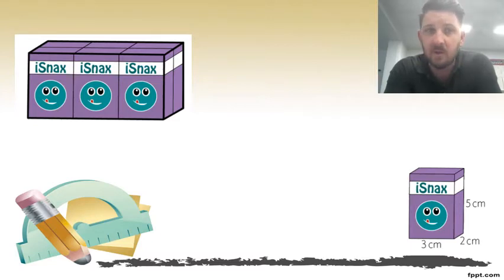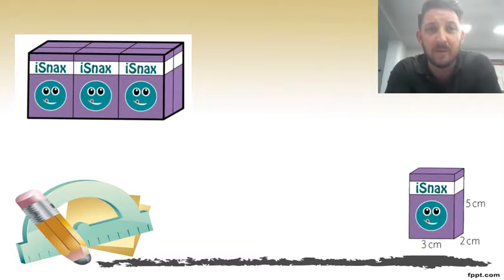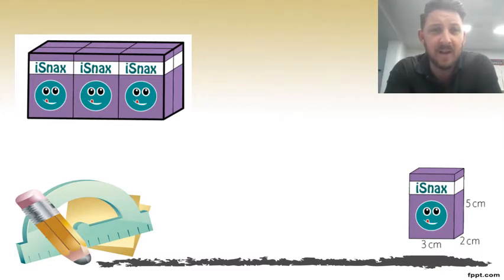It's looking at tessellating three-dimensional shapes. We can see these in real life when we're looking at bricks in a house, or poppers in a carton, or the amount of cans that are in a carton. When we're looking at the surface area, we're looking at the outside of a shape.